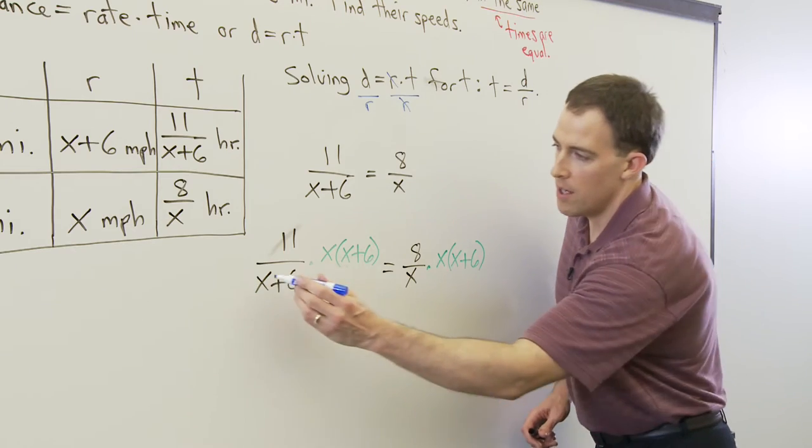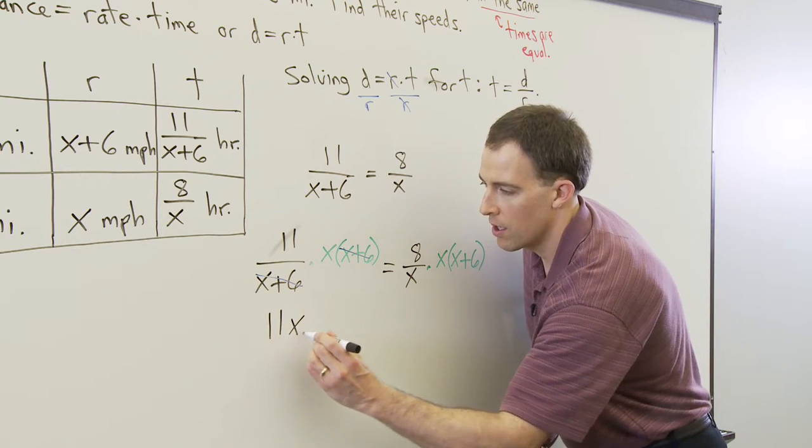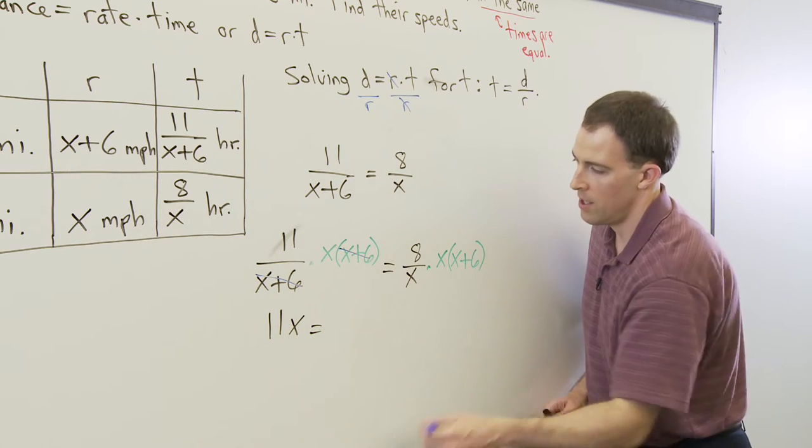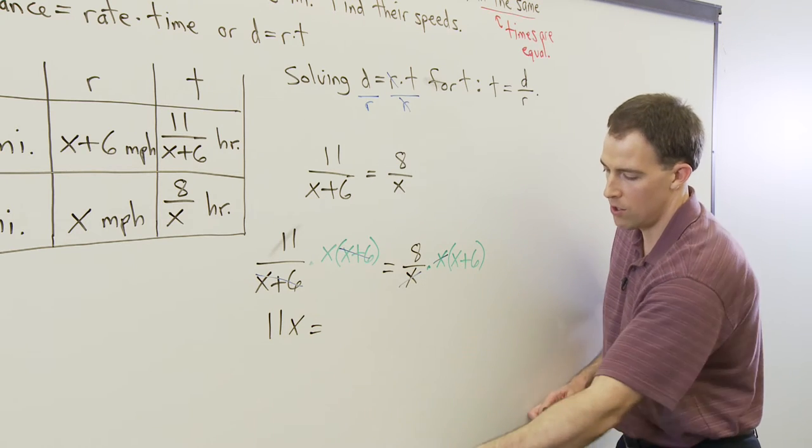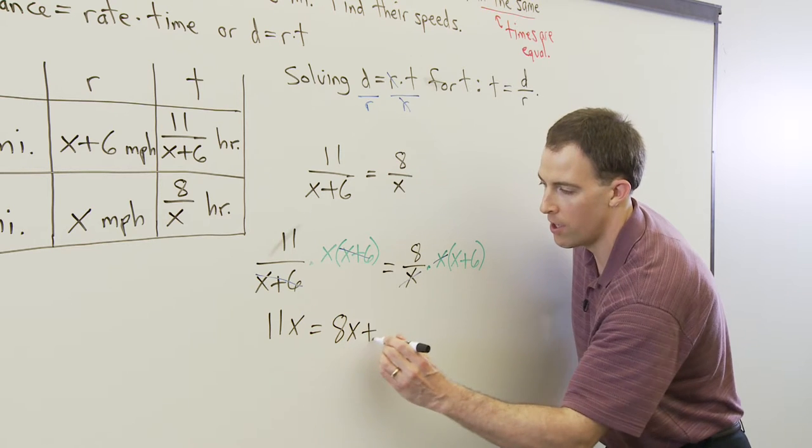On the left side, the X plus 6 factors cancel and we've got 11X. And then on the right side, the X factors cancel each other out. And then the 8 gets distributed through the parentheses. That's going to become 8X plus 48.